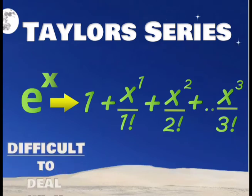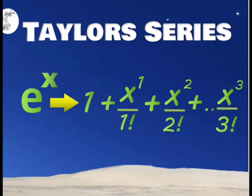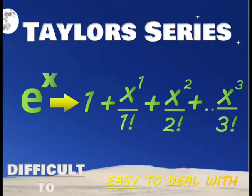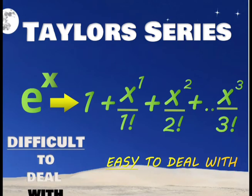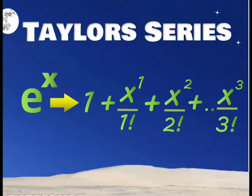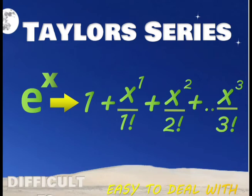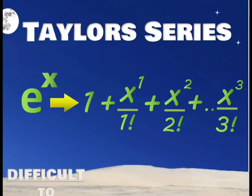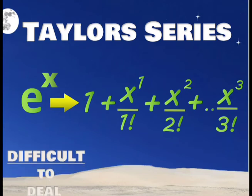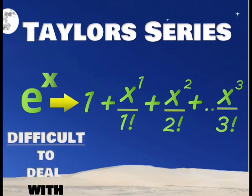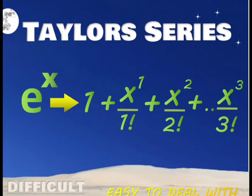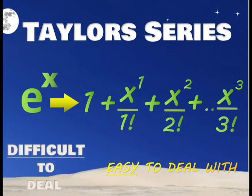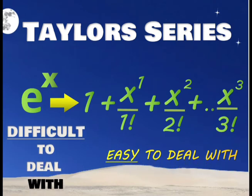The reason why the Taylor series is important is because dealing with e raised to x is difficult for mathematicians, but to deal with the sum of polynomials - 1 plus x raised to 1 upon 1 factorial, x raised to 2 upon 2 factorial, and so on - is much more easier. The terms on the right-hand side of the arrow only replicate e raised to x.